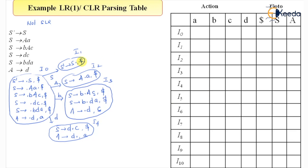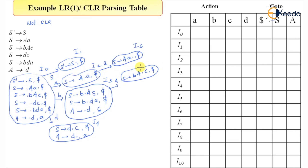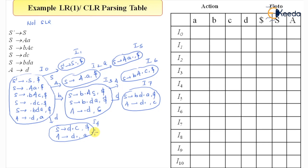Now completing the next level. On input small a from i2, this will become S-derived A A dot followed by dollar — this is state i5. On input capital A from i3, this will become S-derived B A dot C followed by dollar — state i6. On input small d from i3, this will become S-derived B D dot A followed by dollar, and A-derived D dot followed by C — state i7. From i4 on input C, this gives S-derived D C dot followed by dollar — state i8.